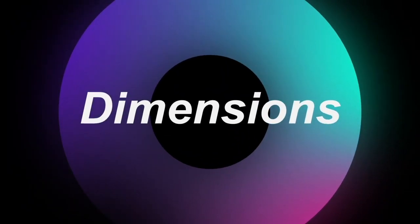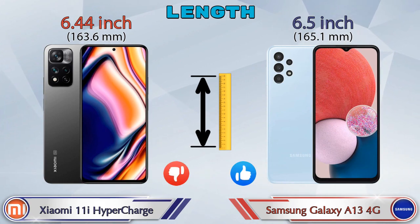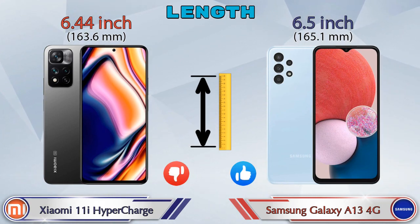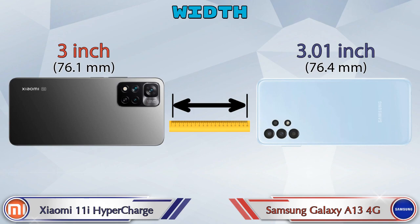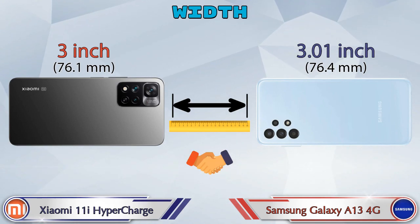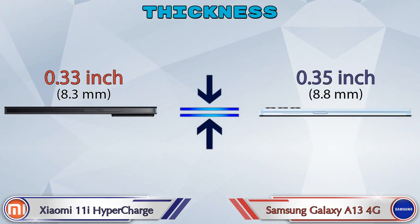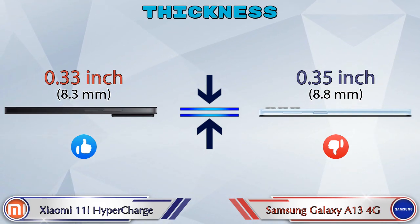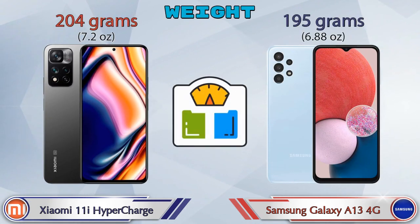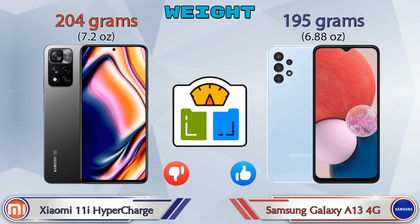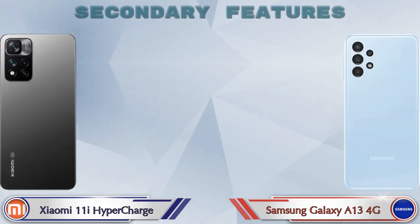Checking dimensions: the length of the 11i HyperCharge is 6.44 inches and the Galaxy A13 4G is 6.5 inches. Width is 3 inches on the 11i HyperCharge and 3.01 inches on the Galaxy A13 4G, which are almost the same. Thickness is 0.33 inches on the 11i HyperCharge versus 0.35 inches on the Galaxy A13 4G. Weight is 204 grams for the 11i HyperCharge and 195 grams for the Galaxy A13 4G.